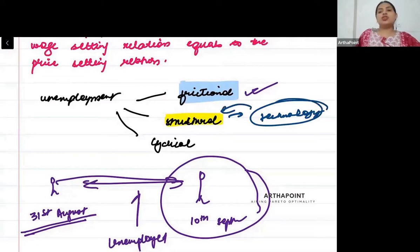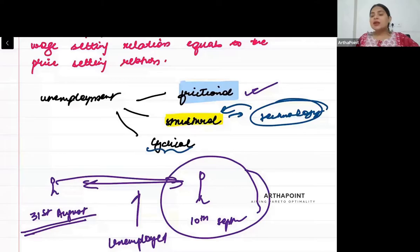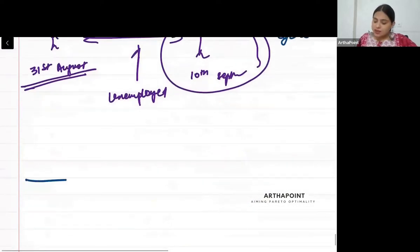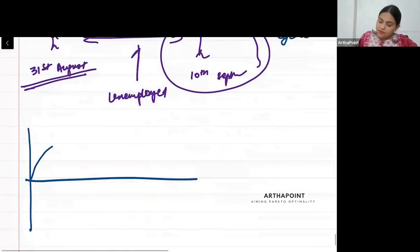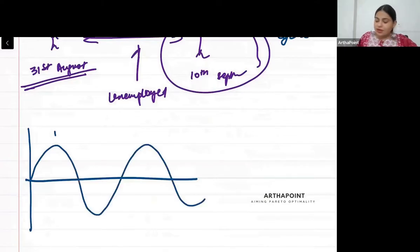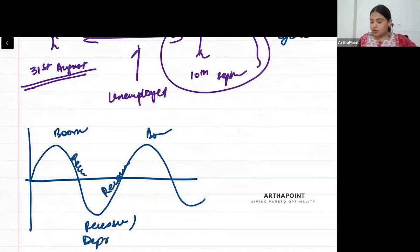Now here is cyclical unemployment. This is the unemployment which occurs in the economy cycles. What is the economy cycle? There is the boom, then recession, then boom. This is a recovery period, this is a recession period, this is a depression, this is where we have a boom.